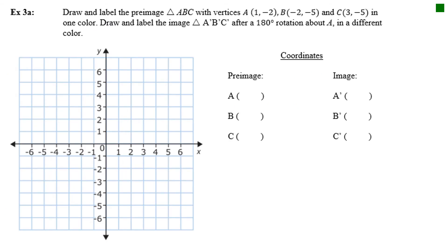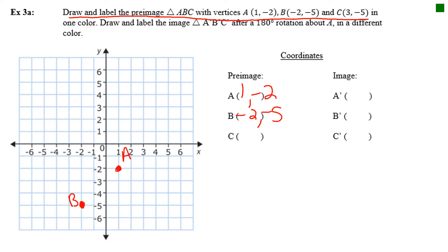Example 3: Draw and label the pre-image triangle ABC with vertices A at (1, −2), B at (−2, −5), and C at (3, −5) in one color. Draw and label the image A′, B′, C′ after a 180-degree rotation about A in a different color. We'll start by plotting the pre-image on the graph: A at (1, −2), B at (−2, −5), C at (3, −5). Then connect the points.